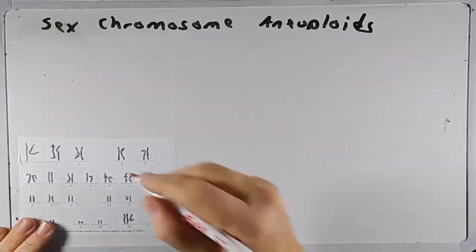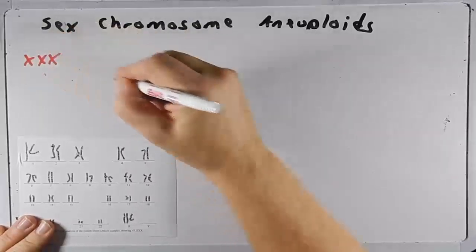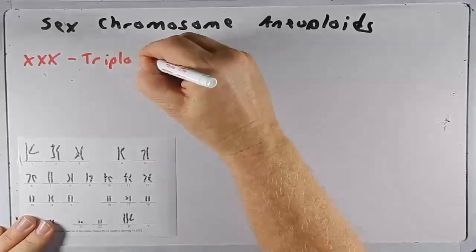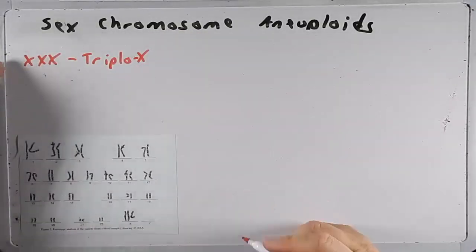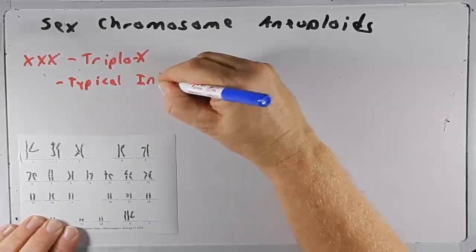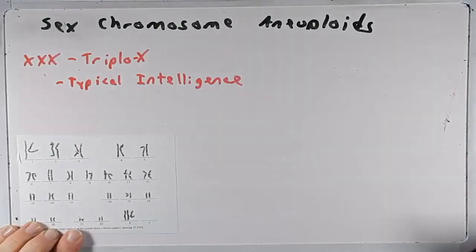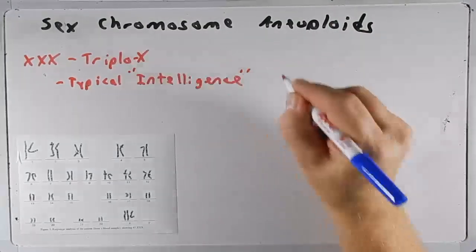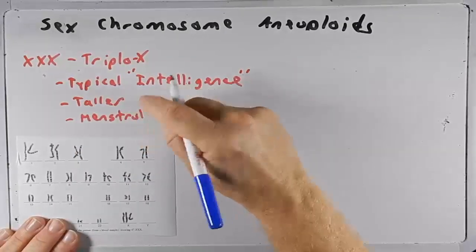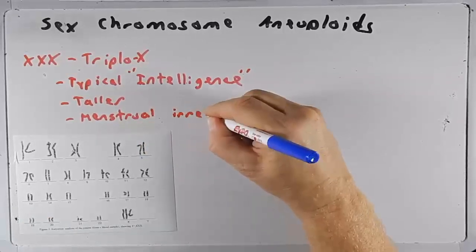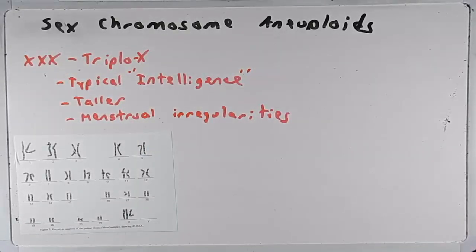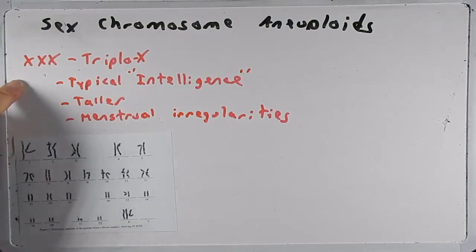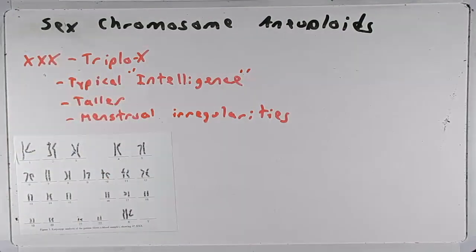Now let's talk about the other extreme — when you have three copies of the X chromosome, commonly referred to as Triple X. Typically someone who is Triple X will have typical intelligence. They might not appear as intelligent as their siblings but it's hard to know whether that reflects any intellectual disadvantage or whether it's a social context effect — they may simply be treated differently. They do tend to be taller and have menstrual irregularities. They aren't necessarily sterile and can typically have children. If you met someone who was Triple X you wouldn't know, because two of those X chromosomes would be inactive.